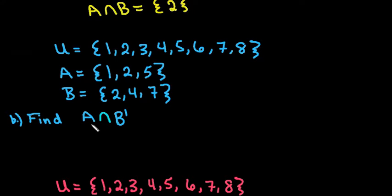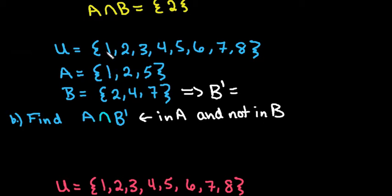And we're looking for the values that are in A and not in B. So the first thing we have to do is take this set and find its complement. We're going to look at the universal set and find all the values that don't show up here. So basically I can eliminate the 2, 4, and 7. Those are the numbers that are in B. So that tells us that the complement of B is {1, 3, 5, 6, 8}.